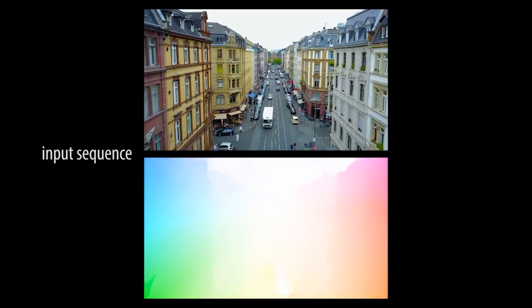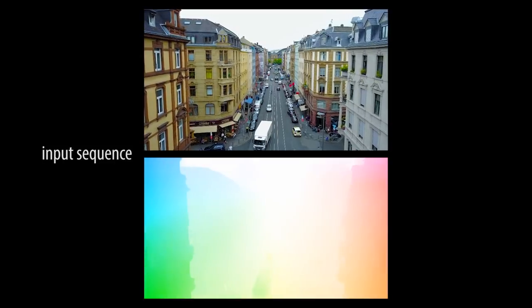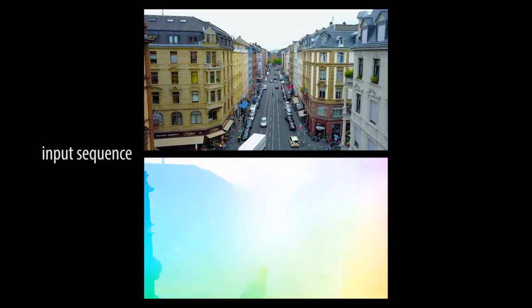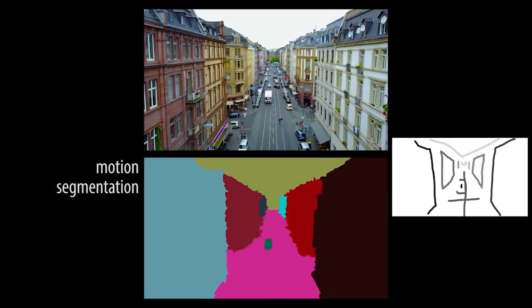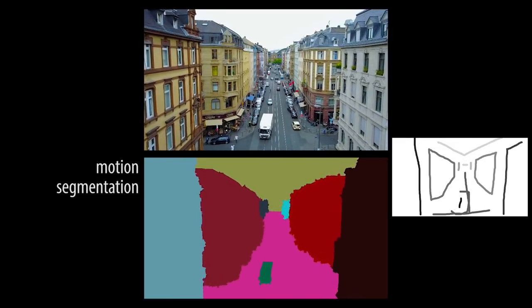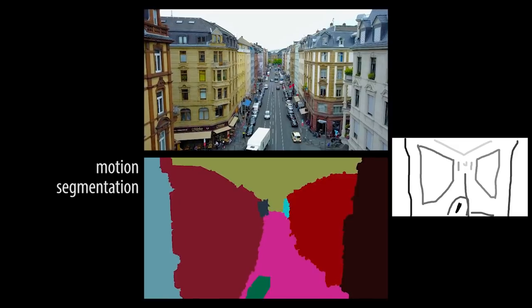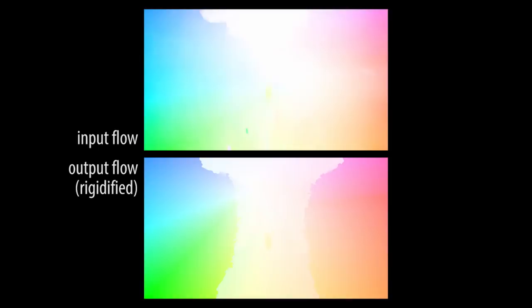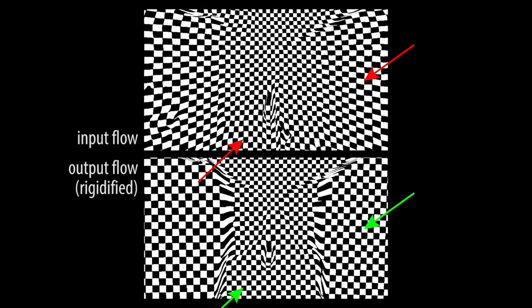Given an input video and its optical flow, we first segment the video into near rigid pieces. The user controls the segmentation with scribbles. We then optimize the optical flow to make it as rigid as possible within each segment. Advecting a checkerboard texture along this optical flow reveals its rigidity.